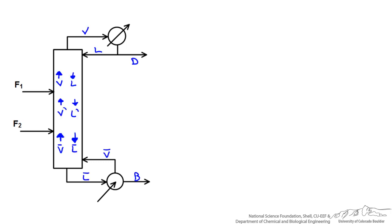To determine our operating lines for each of these sections we want to perform material balances around these different sections. For instance, let's start with a balance around the top of our column. If we wanted to determine our operating line for our rectifying section we could draw a box and write our material balance coming in and out of this box.